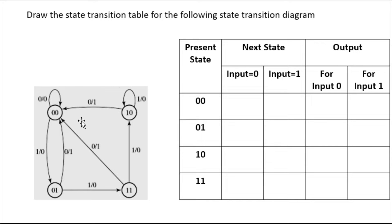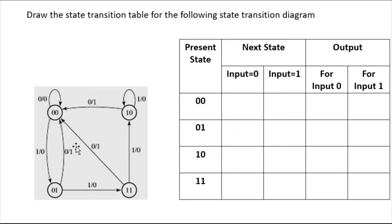This is the transition table or transition diagram and we need to do the transition table again. The values inside the circle don't matter — the values outside the circle, within the arrows, matter. That will tell you what will be the next state and what will be the output. So let's start with state 00.